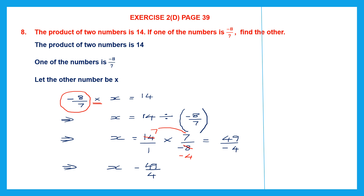Minus 49 by 4 — that means the other number. We have been asked to find the other number, and we have found it: that is minus 49 by 4.